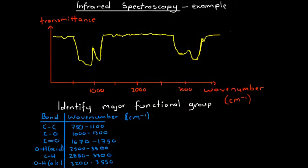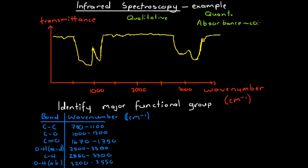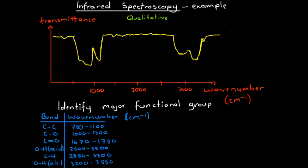Here we're going to look at an example of how we can use infrared spectroscopy to help us identify a chemical compound. This is a qualitative example. However, we can also use infrared spectroscopy for quantitative analysis — just as with column chromatography and UV-visible spectroscopy — using the idea that absorbance is proportional to concentration, and therefore transmittance is inversely proportional to concentration.